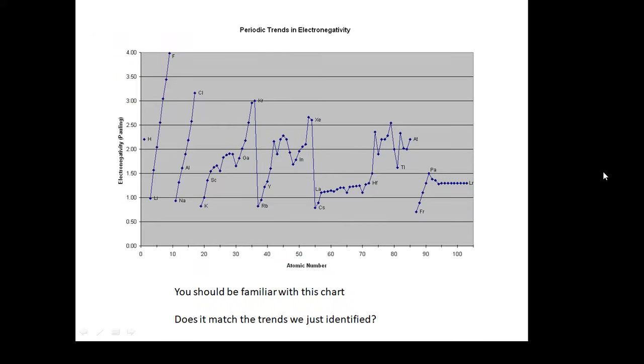This is a chart which might turn up in an exam and it's electronegativity for different elements against atomic number. You should be familiar with this chart and studying it. You should see that it agrees with what we just talked about on the last slide. If you look from sodium up to chlorine, the electronegativity is getting bigger. But then as we go down a group, the electronegativity gets smaller.